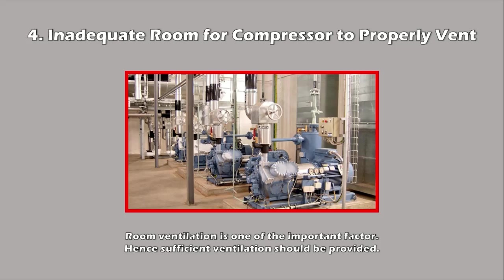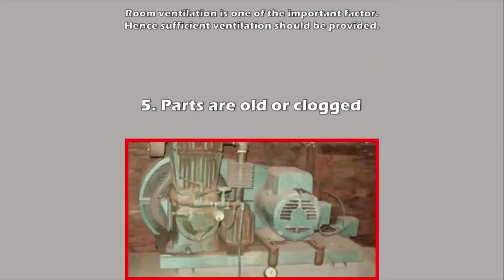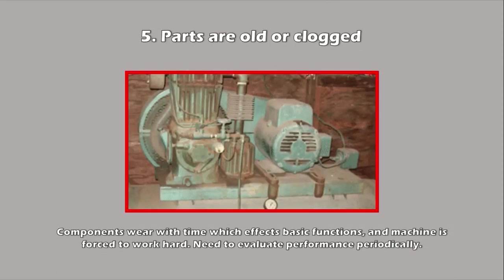As the components of an air compressor wear down with age, the machine as a whole is forced to work harder to complete its basic functions. For example, if the interior processes become clogged in vital areas, the air compressor must exert more energy just to get air from the compression chamber and off to the hoses that connect to assorted pneumatic tools. To ensure that the interior components continue to operate efficiently without generating excess heat, have the interior performance evaluated on a periodic basis.